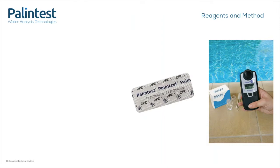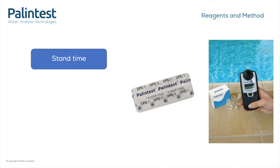The first thing we always check when a query comes in is the method and the reagents. There are a few things that we've spoken about in previous webinars, like making sure that you use in-date reagents and ensuring you use them in the correct order where necessary. But this is our tech support checklist, and these are the first things that we try when a query comes in. What I'll give you is our top three things to check when carrying out a photometer test. The first is to follow the method carefully. One of the key things is making sure you adhere to any stand time instructions. The stand time is what allows the chemical reaction to occur and the colour to fully develop, and helps to ensure that you get the best results.